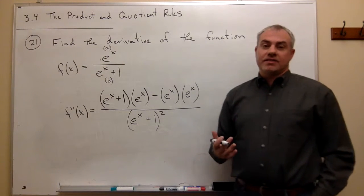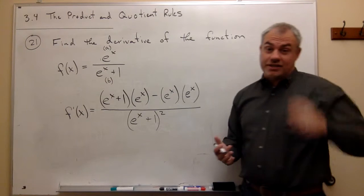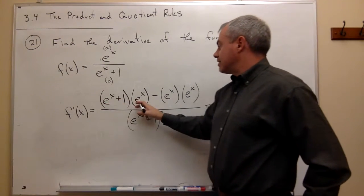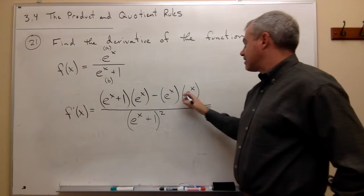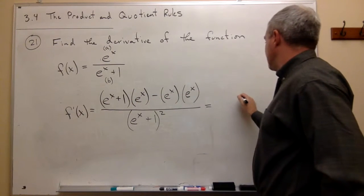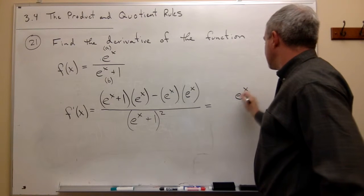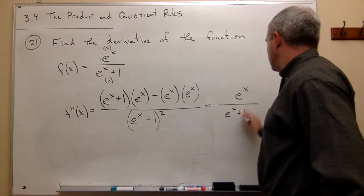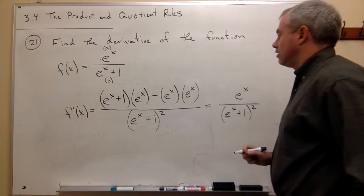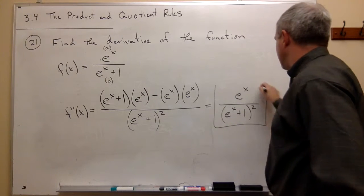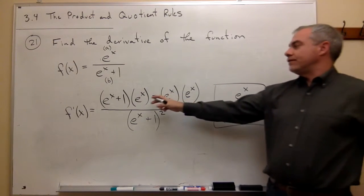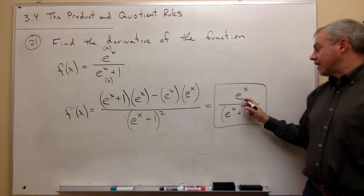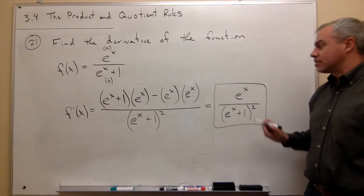I could simplify this, and it simplifies down quite a bit. We have e to the x times e to the x minus e to the x times e to the x, so on top we just end up with e to the x. And on the bottom we have e to the x plus 1 quantity squared. So the first derivative is e to the x over e to the x plus 1 squared.